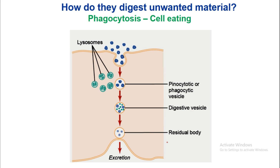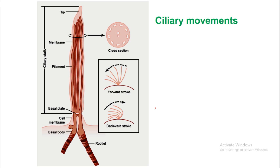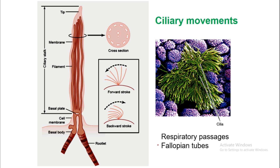How do cells digest unwanted material? This is known as phagocytosis, or cell eating. The different phases and steps of phagocytosis are explained in detail in the blood system section. Cell movement occurs due to amoeboid movements, and ciliary movements — present in the respiratory passages and in the fallopian tubes.